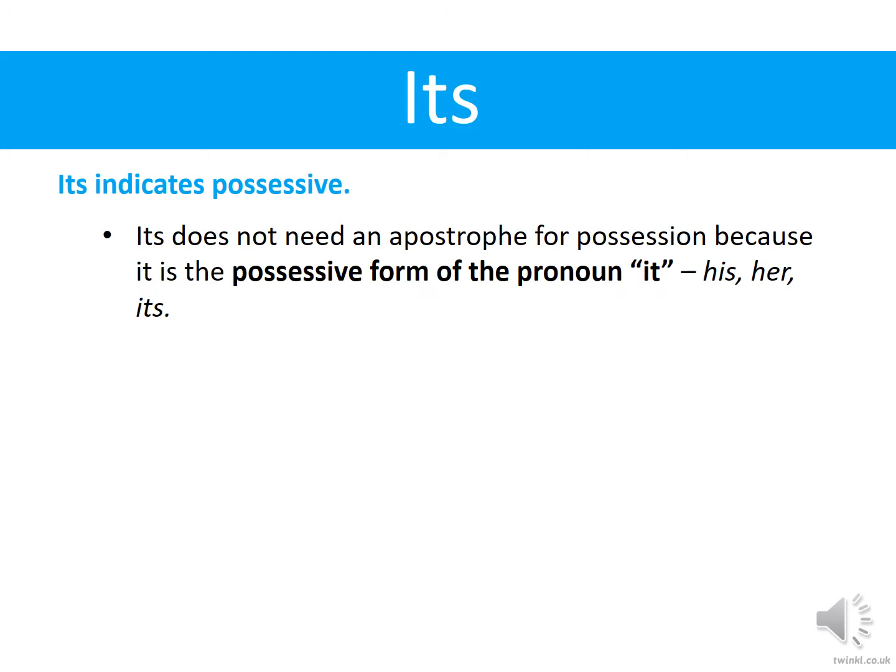Its without an apostrophe indicates possession. It doesn't need an apostrophe because it is the possessive form of the pronoun — it will belong to him or her: it's his, it's hers. Or it might belong to a thing or an object.